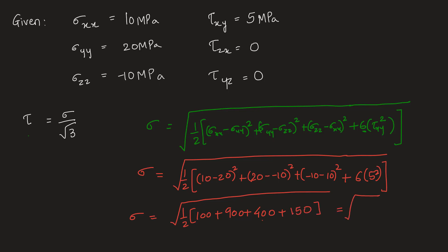So this turns out to be 1550 divided by 2, so that comes out 775. Root of 775 is 27.84. This value is in megapascal because all the values here are in megapascal and we are only adding, squaring, and then taking the square root, so unit remains same.